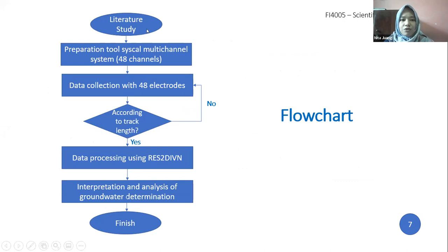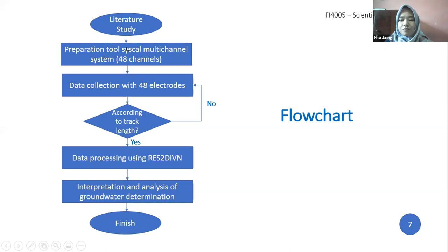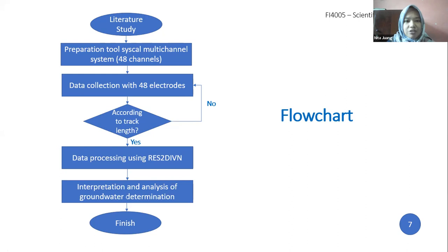The research began with a literature review so that the author could understand the theoretical basis. The survey used a multi-channel system with a 40-channel Dipole-Dipole configuration, with a track length of 950 meters and an electrode spacing of 10 meters. Data was recorded using software installed on a laptop, and then overlapped to adjust the total track length.